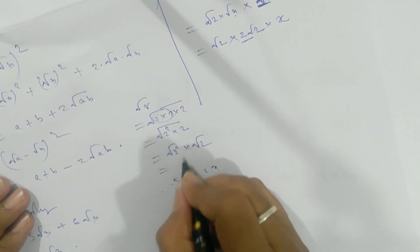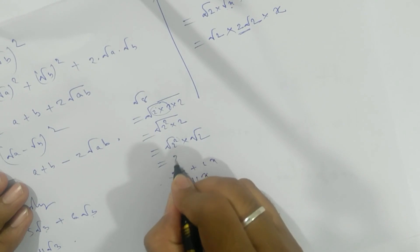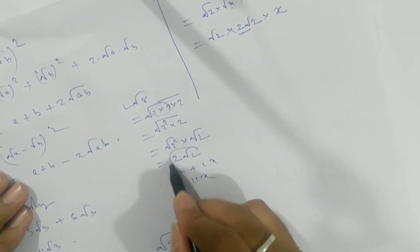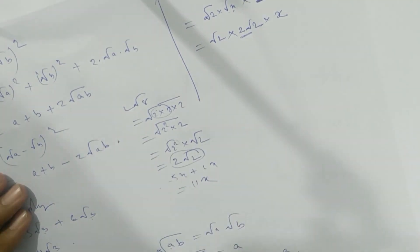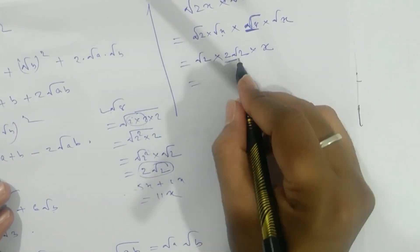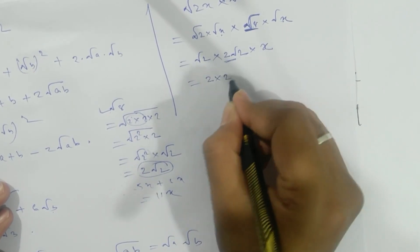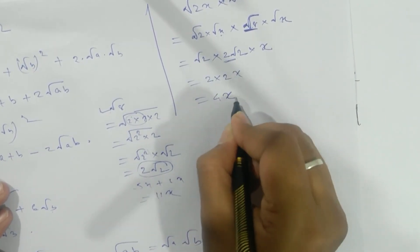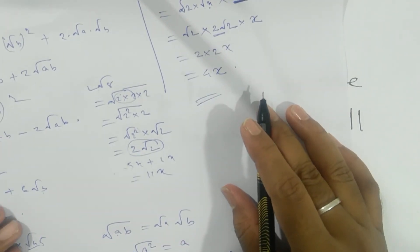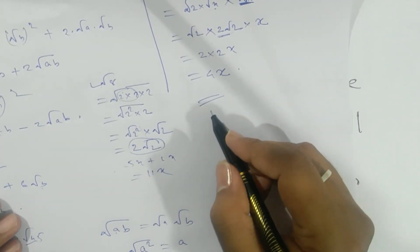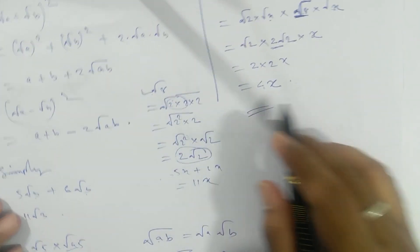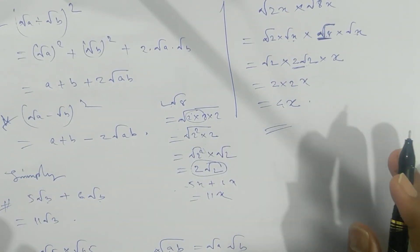So √8 can be written as 2√2 because 8 = 4×2 and √4 = 2. Here √2 × √2 gives 2, and the final answer is 4x. In the next class we will see rationalization, where we will use all these formulas. Thank you.